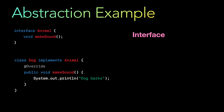You can just provide the definitions, and the classes will implement the interface. So in this case, class Dog implements Animal. In inheritance when we used abstract classes we used the keyword 'extends', but with interfaces we use 'implements', because you have to provide the implementation of the methods defined in the interface. Here we have overridden the make sound method and are providing an implementation — for example, System.out.println('dog barks').